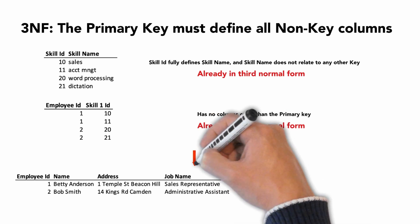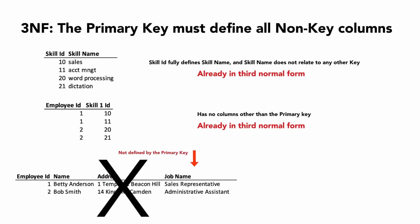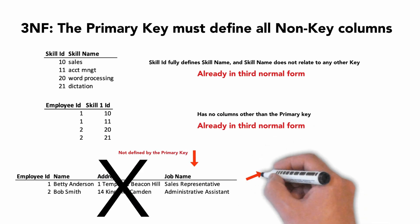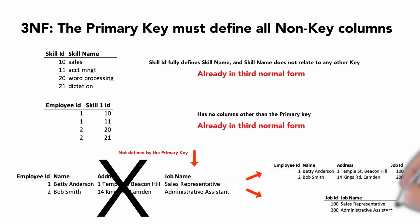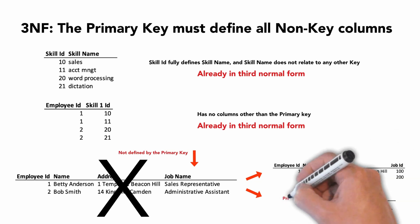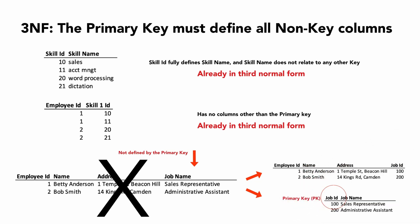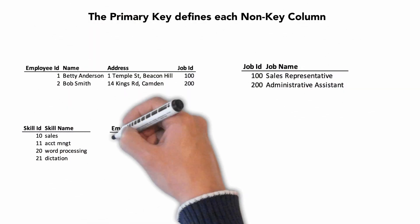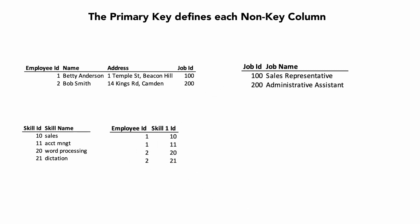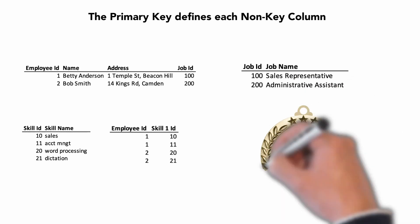But employee ID does not define job name, hence violating third normal form. This means that job name needs to be split into its own spreadsheet and table, and for consistency, we have created a computer-generated job ID. Because the job ID links employee and job, we need to create a new column, job ID, in employee. As we discussed in second normal form, any primary key that links spreadsheets or tables also becomes a foreign key. Now we have four spreadsheets or tables with nice rows of data, where the primary key defines each non-key column. Welcome to third normal form.